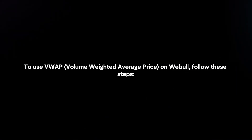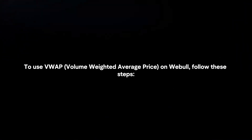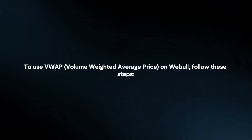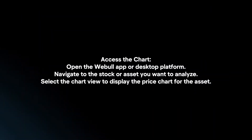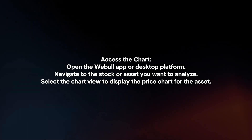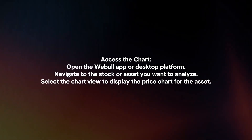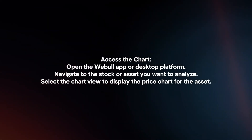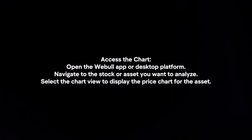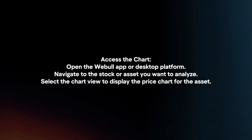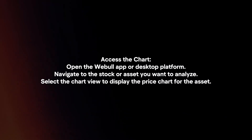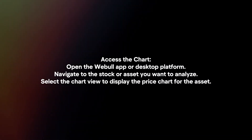To use VWAP on VBOL, follow these steps. Access the chart by opening the VBOL app or desktop platform, navigate to the stock or asset you want to analyze, and select the chart view to display the price chart for the asset.